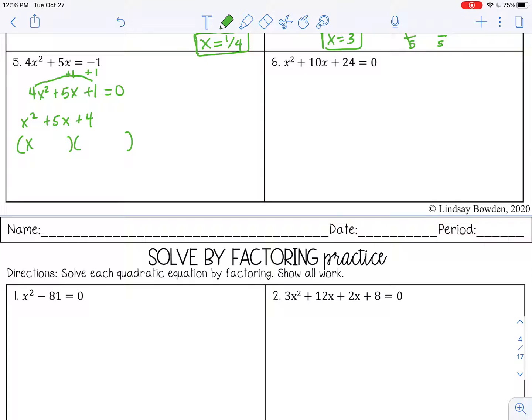The only factors are 4 and 1 and 2 and 2. Two and 2 is not going to give me 5, but 4 and 1 will. Don't forget to go back and divide by that a. This is going to reduce to x plus 1. One divided by 4 will not reduce, so I'm going to move that 4 here. Then I need to set both of these equal to zero. X equals negative 1, and x equals negative 1 fourth. Those are my two solutions.